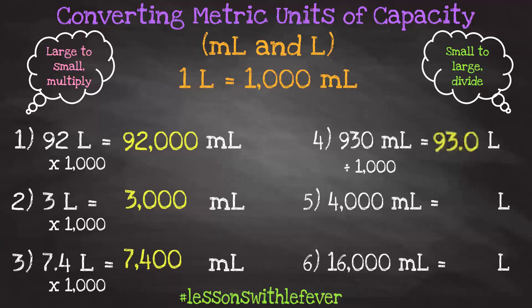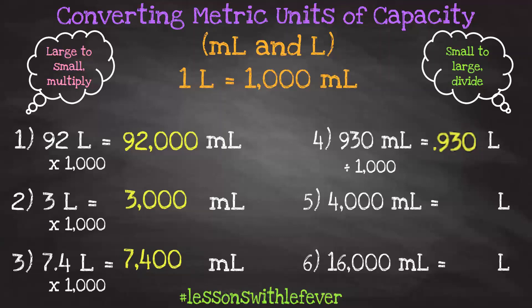I already moved it one time, so that would be 93. I have to move it two more times. Moving it once more gives us nine and 30 hundredths. One more time gives us 930 thousandths. Now, 930 thousandths is the same as 93 hundredths — if I take away that zero at the end, it doesn't change the value because we didn't move the decimal point. So 930 milliliters is equivalent to 0.93 liters.